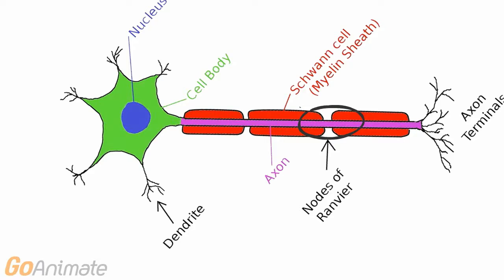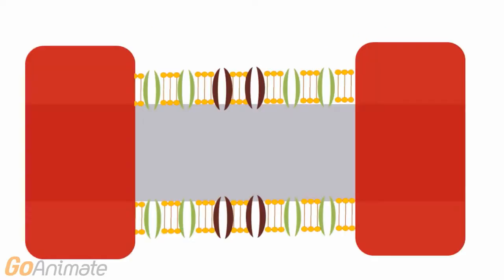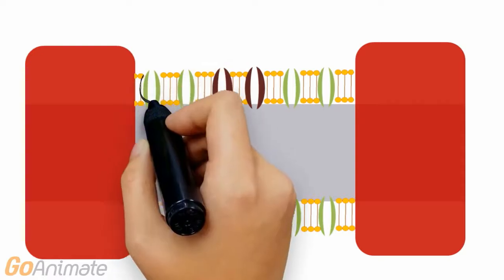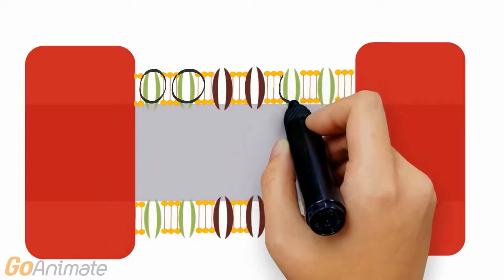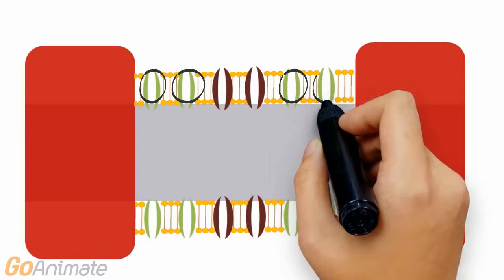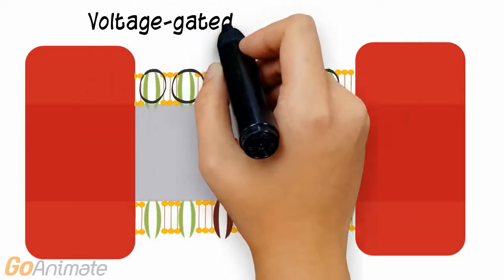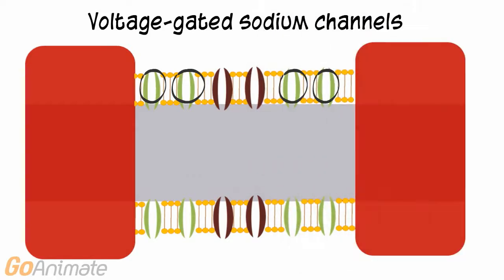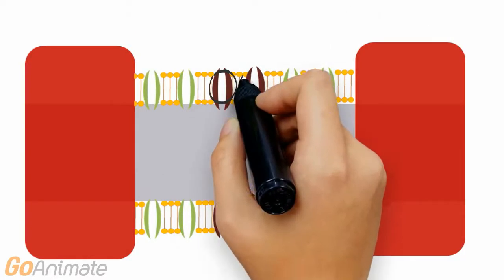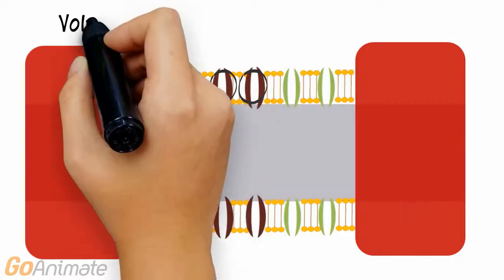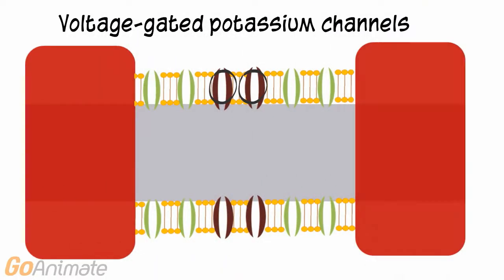Let's take a closer look at a node. The nodes contain a couple of important transport proteins: voltage-gated sodium channels and voltage-gated potassium channels.